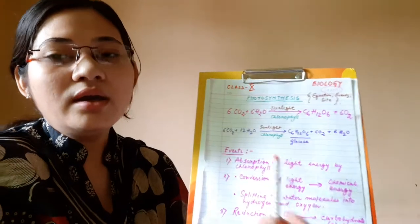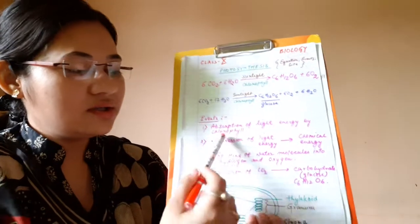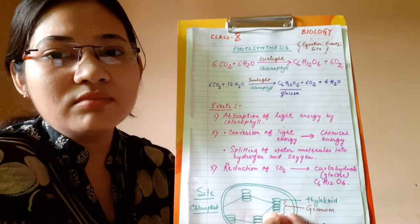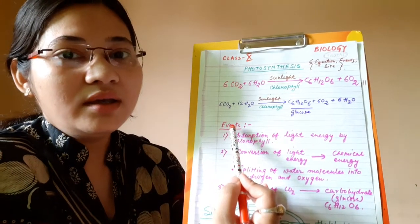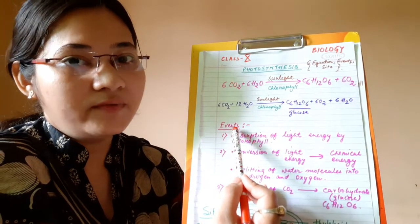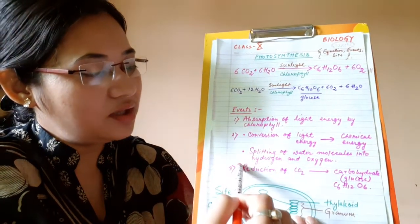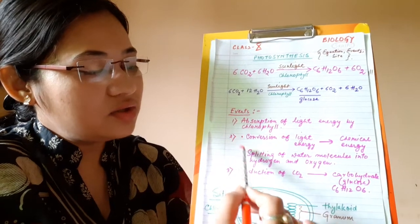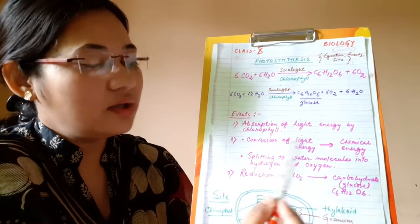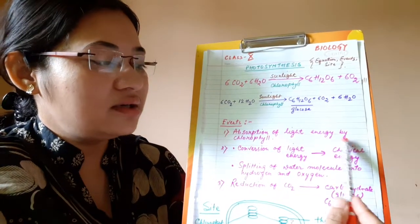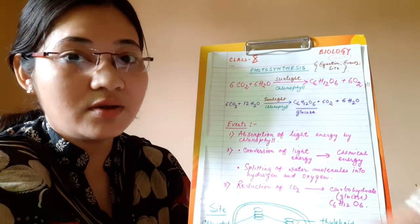Now let us come to the events of photosynthesis, or the steps which are involved. This is a very common question in Class 10 — what are the important events during the process of photosynthesis? We are going to memorize only three events. The first event is: absorption of light energy by chlorophyll.